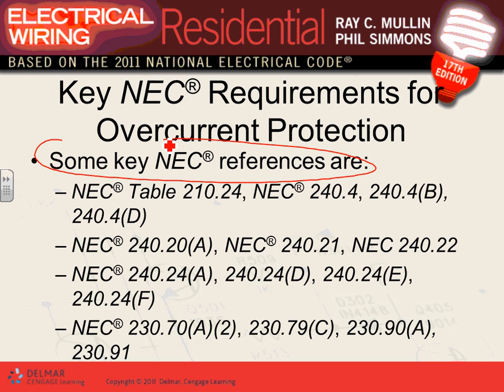Overcurrent protection devices shall be accessible — you have to put them in a place where you or authorized people can access them. You cannot put circuit breakers in easily ignitable materials, like closets with combustible contents, because if it sparks and arcs, you can burn your building.